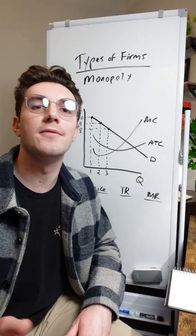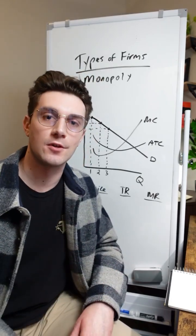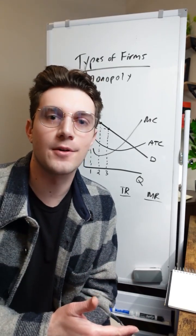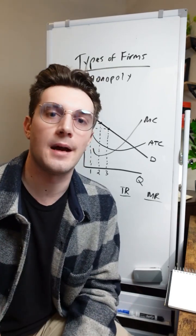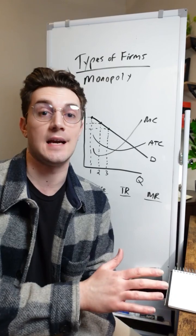Starting with why the marginal revenue curve for monopolies is downward sloping, comparative to perfectly competitive markets where it's horizontal. In those perfectly competitive markets, the firms are price takers. They've got no market power because there's infinite firms selling the exact same product.